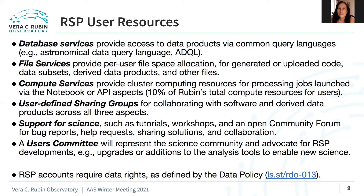Rubin Observatory will also provide support for science and use of the RSP, such as tutorials, workshops, and an open community forum for bug reports, help requests, sharing solutions, and collaboration. The Users Committee will represent the science community to the Rubin Observatory Director's Office, and be charged with advocating for RSP developments on behalf of users, such as upgrades or additions to the analysis tools to enable science. Access to the RSP requires data rights, as defined in the Rubin Observatory data policy. All astronomers working in the US and Chile have Rubin Observatory data rights, including students, as do named individuals on international contributor teams.